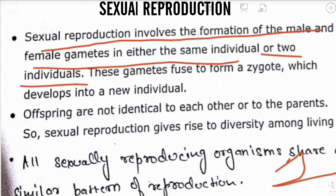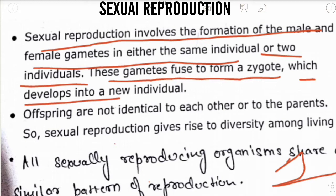Male gametes are produced by males and female gametes are produced by females. These gametes fuse to form a zygote, which then develops into a new individual.